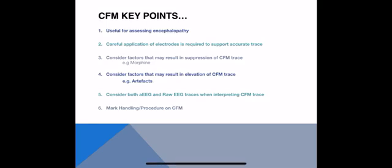Key points to remember: CFM is useful for assessing encephalopathy. Careful application of electrodes is required to support an accurate trace. We should consider factors that may cause suppression of the CFM trace, such as morphine or anticonvulsants, and factors that may cause elevation, such as artefacts. We should consider both the AEEG and the raw EEG when interpreting CFM, and remember to mark handling and procedures on the trace.